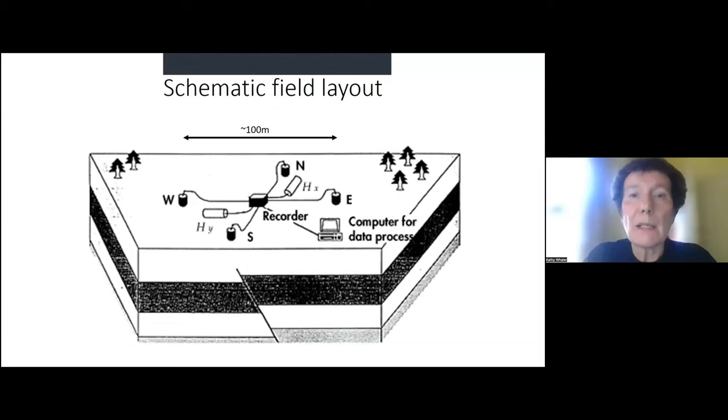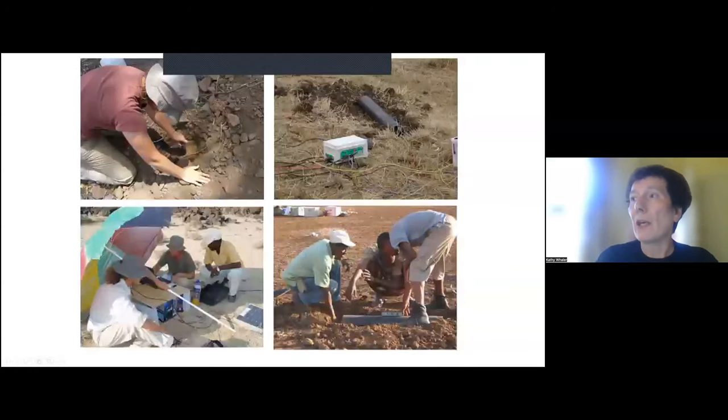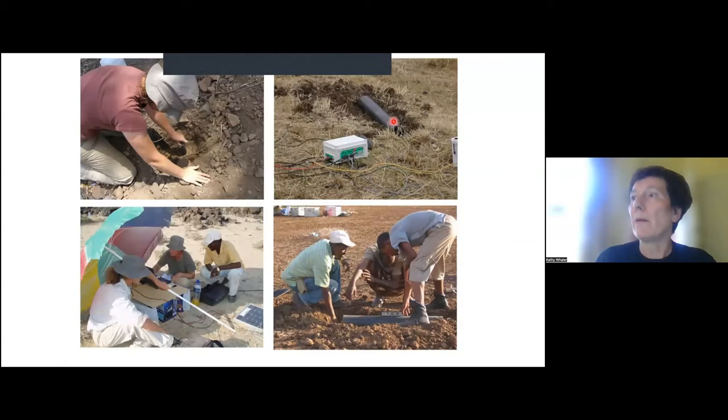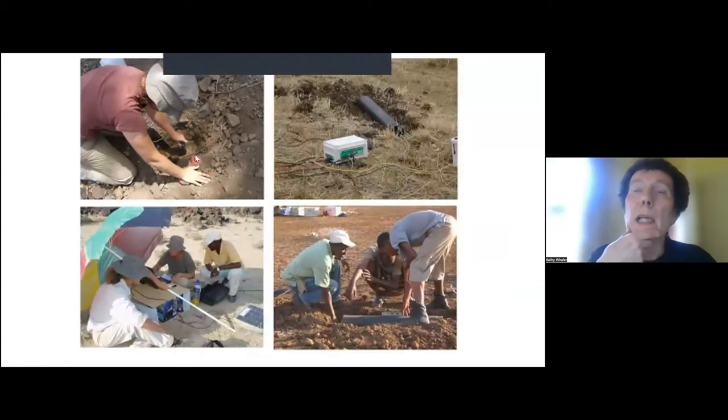So here is the schematic field layout. And you see that we need an area of about 100 meters squared. We've got magnetic sensors here. These are going to be coils. This is what we use for broadband. If we're doing long period measurements, then we use fluxgate magnetometers. And then we measure the electric field by sensing the voltage difference between pairs of electrodes. So if we know what the voltage difference is, we divide by the length of the line, the separation between the two. And that gives us the electric field. It's really important to be accurate in your setup, very careful leveling and also very careful orientation of north, south and east, west.